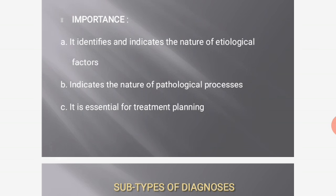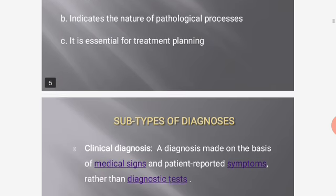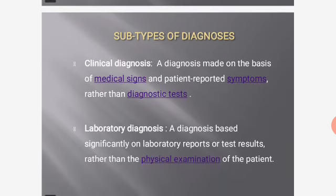Regarding importance: diagnosis identifies and indicates the nature of etiological factors, indicates the nature of pathological processes, and is essential for treatment planning. Subtypes of diagnosis include: first, clinical diagnosis — a diagnosis made on the basis of medical science and patient-reported symptoms rather than diagnostic tests.